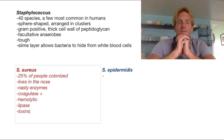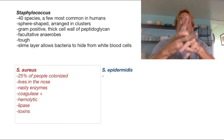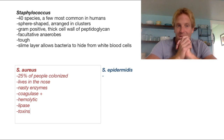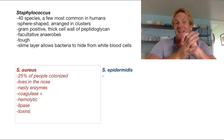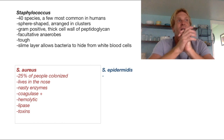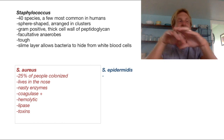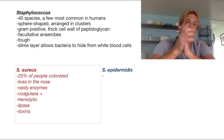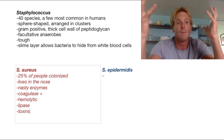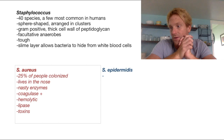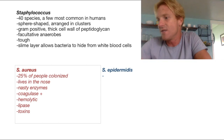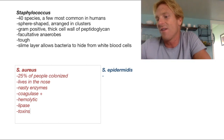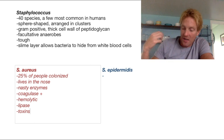If Staph aureus is able to invade the bloodstream, it can lead to widespread infection of the blood called bacteremia. If it is allowed to penetrate the heart, it could cause inflammation of the pericardium around the heart called pericarditis, and this is an extremely big problem. Other issues that Staph aureus can cause include pneumonia and even food poisoning.